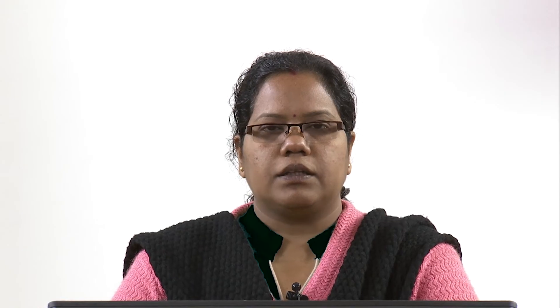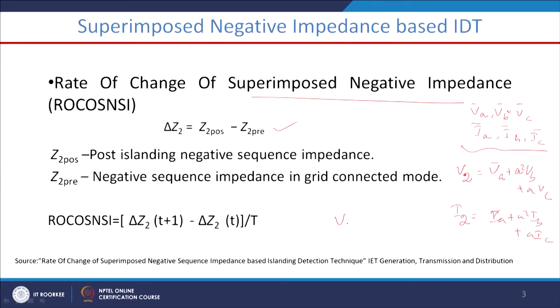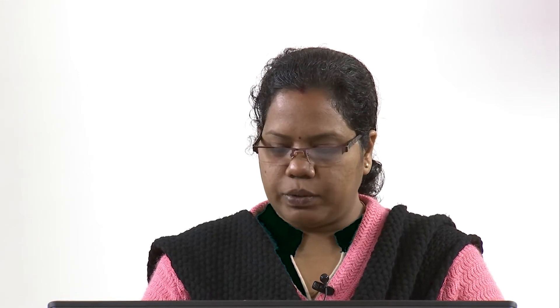One important point: our distribution network is mostly unbalanced in nature. Due to the presence of single-phase loads, unbalancing occurs, so negative sequence voltage and negative sequence current are both present even before any disturbance or before islanding mode of operation. By exploiting this V2_pre and I2_pre information, we calculate Z2_pre — the negative sequence impedance of the microgrid system at the DER terminal when the system is not disconnected — as Z2_pre = V2_pre / I2_pre.